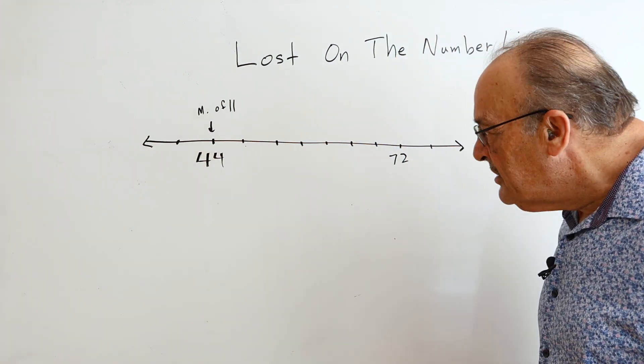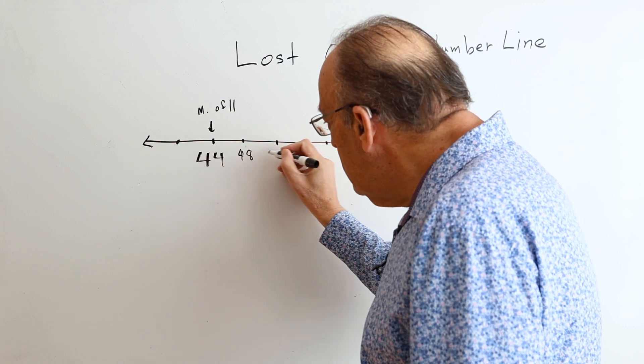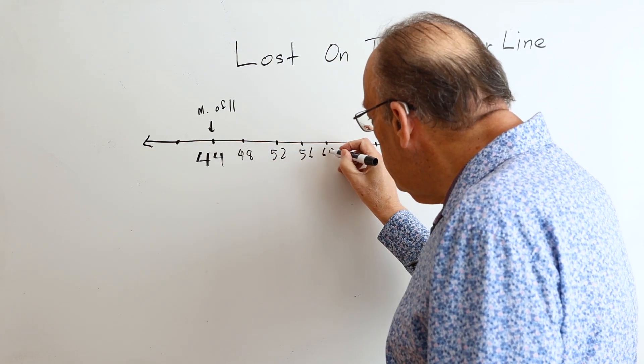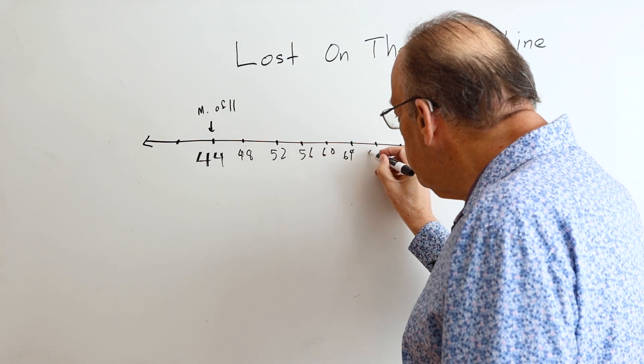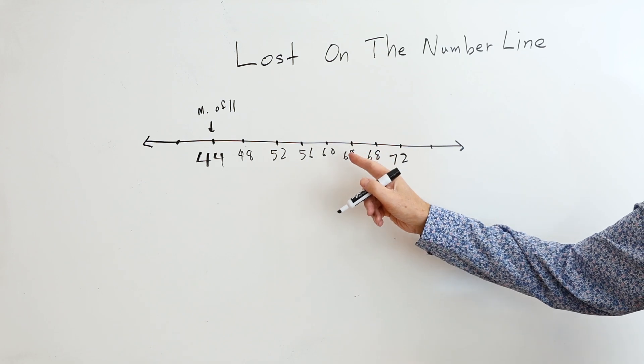So this is going to be 44. And 7 goes into 28 four times. So this is going to be 48, 52, 56, 60, 64, 68. So I have four sheets of this kind of lost on the number line.